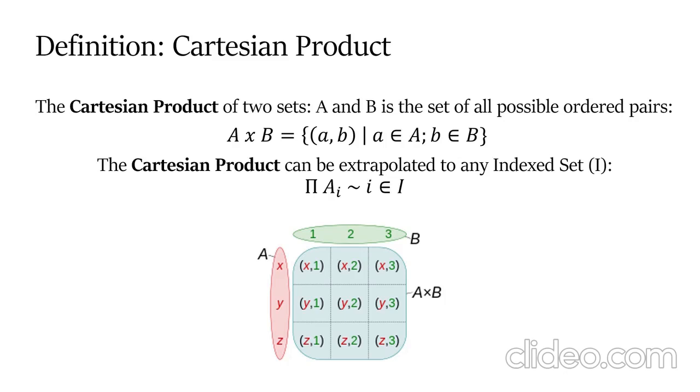Here we see a Cartesian product between set A, which consists of x, y, z, and set B, which consists of 1, 2, and 3. The cardinality of A is three, the cardinality of B is three, so the cardinality of the Cartesian product is 3 times 3, which is nine.